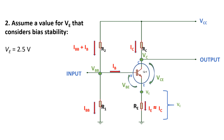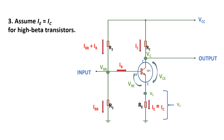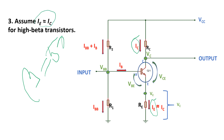Step number two: assume a value for VE. We assume VE is 2.5 volts — this value is needed for stabilizing the transistor's biasing and to get stronger output. Step number three: we assume IE. This current is equivalent to IC when the transistor beta is higher. Our transistor beta is 50, so it's more than one, so we can assume IE and IC are equivalent.